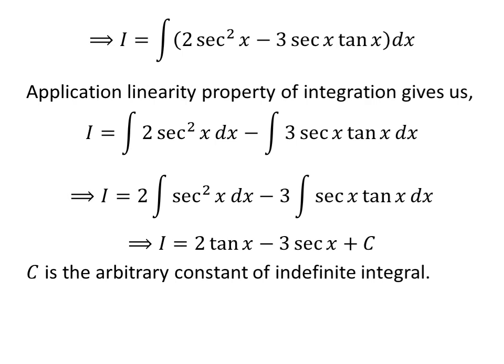Anti-derivative of secant of x times tangent of x is secant of x. The video appearing in the upper right corner explains the derivative of secant of x, and the link is also given in the description section. So, I is equal to 2 times tangent of x minus 3 times secant of x plus capital C. Capital C is the arbitrary constant of indefinite integral — never forget to add this constant.